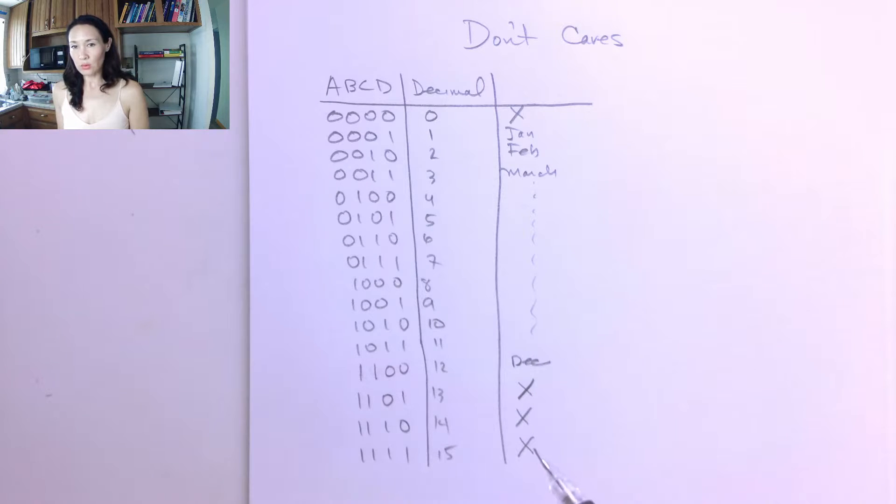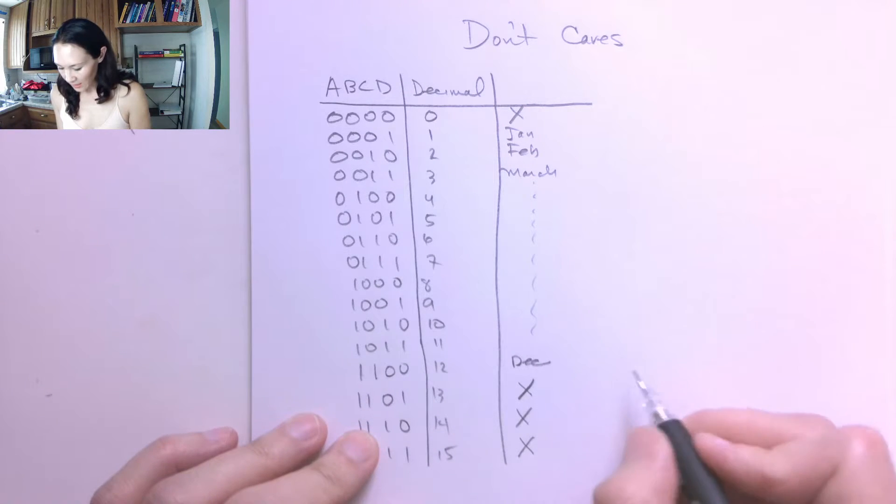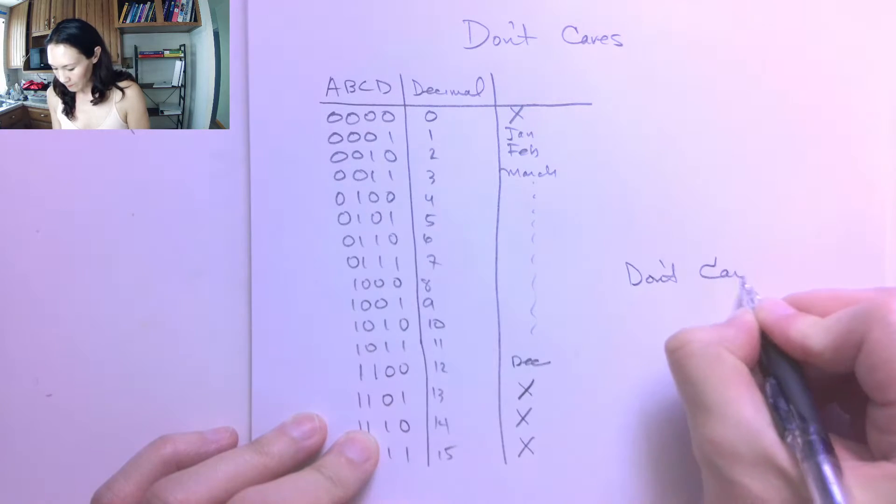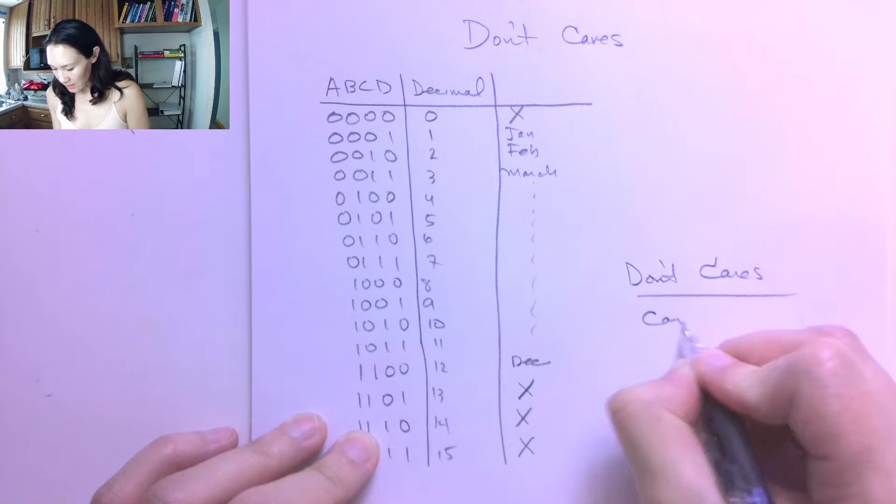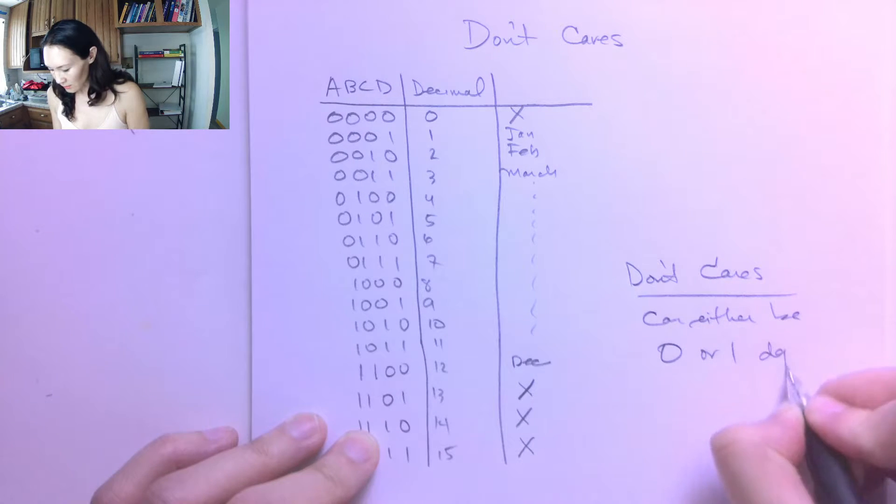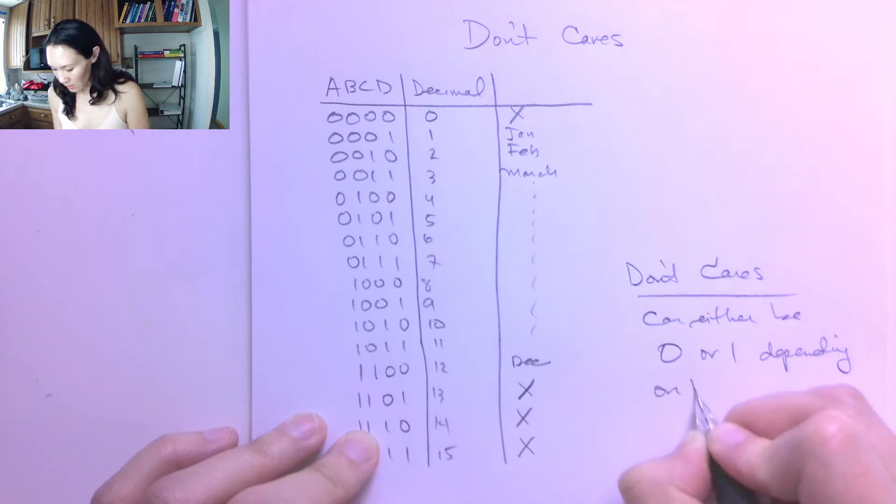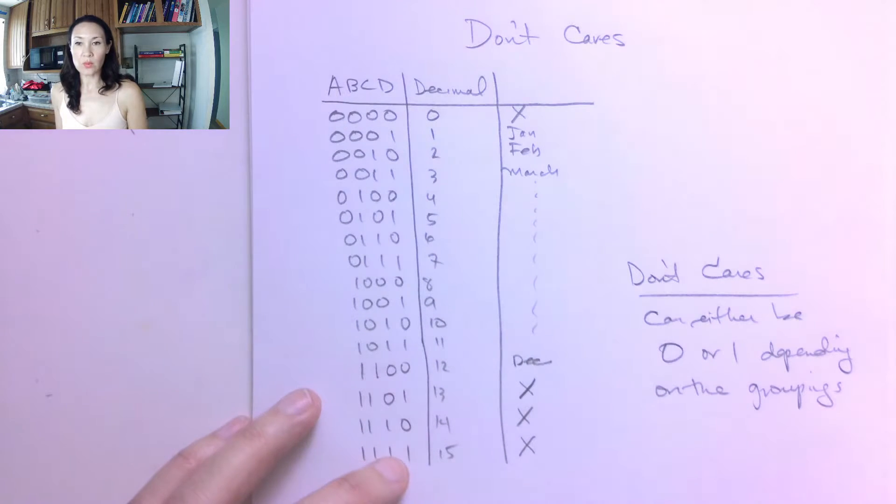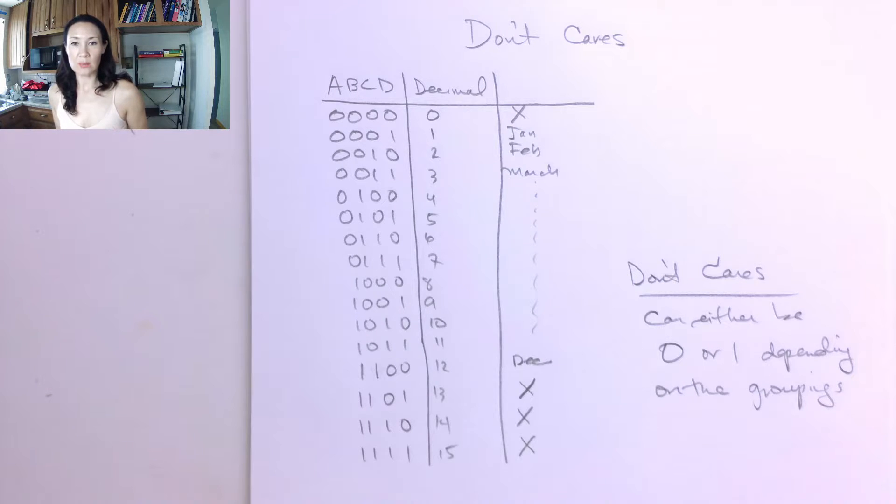And we can actually put these on the truth table. And these are useful because we can use these in our Karnaugh maps for reductions. So these don't cares, they can either be 0 or 1 depending on the groupings. In other words, we can use them as 1s for our groupings to make larger groupings, bigger simplifications, or we can just leave them 0s and we don't have to worry about grouping them at all.